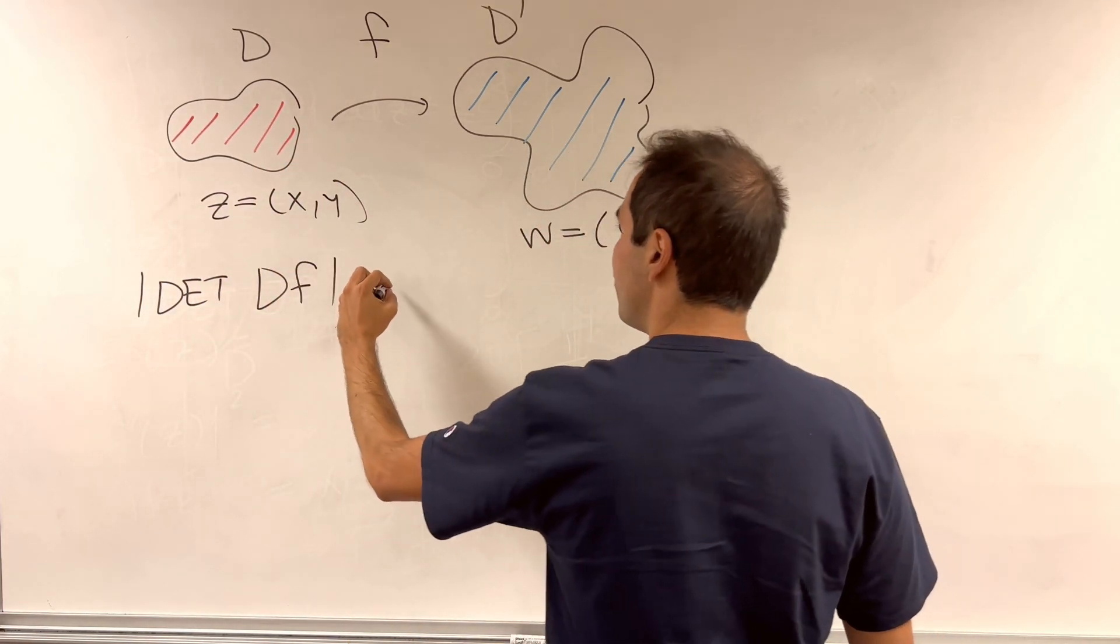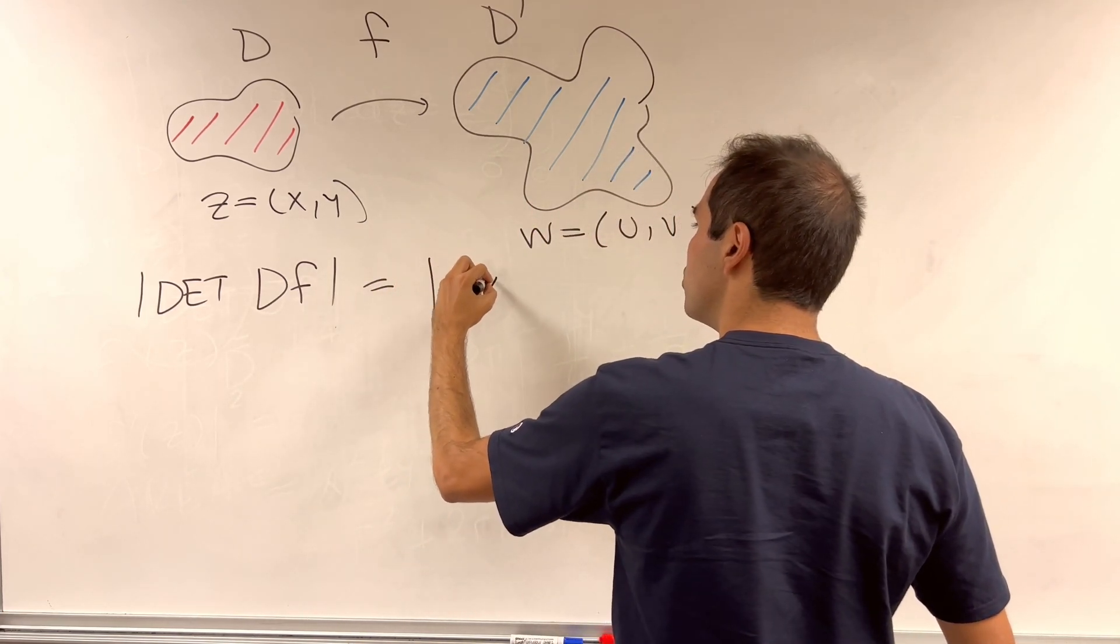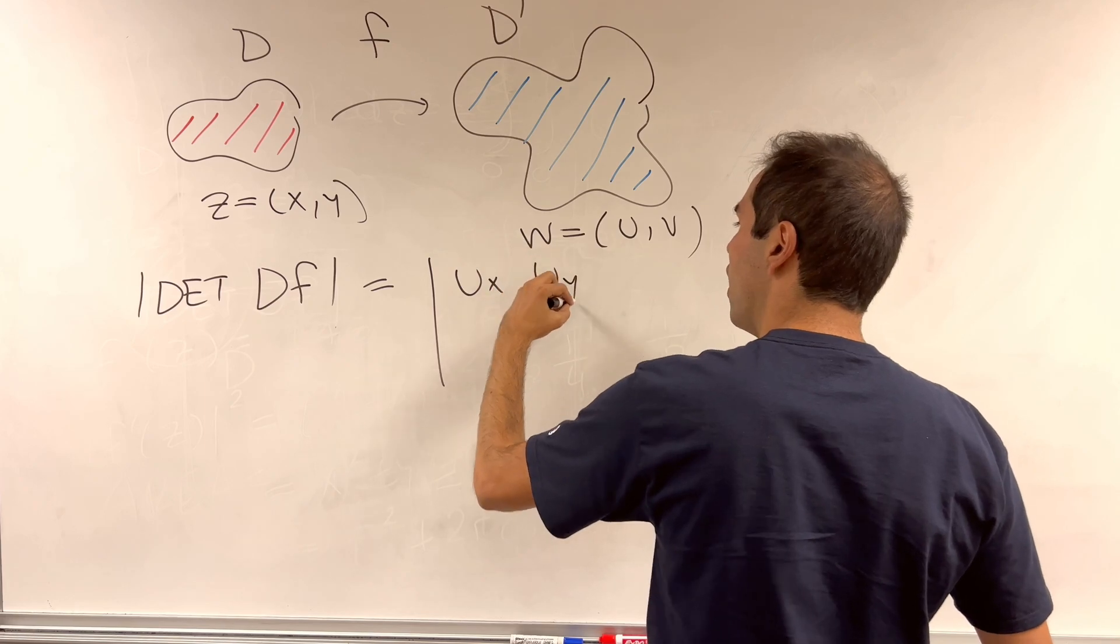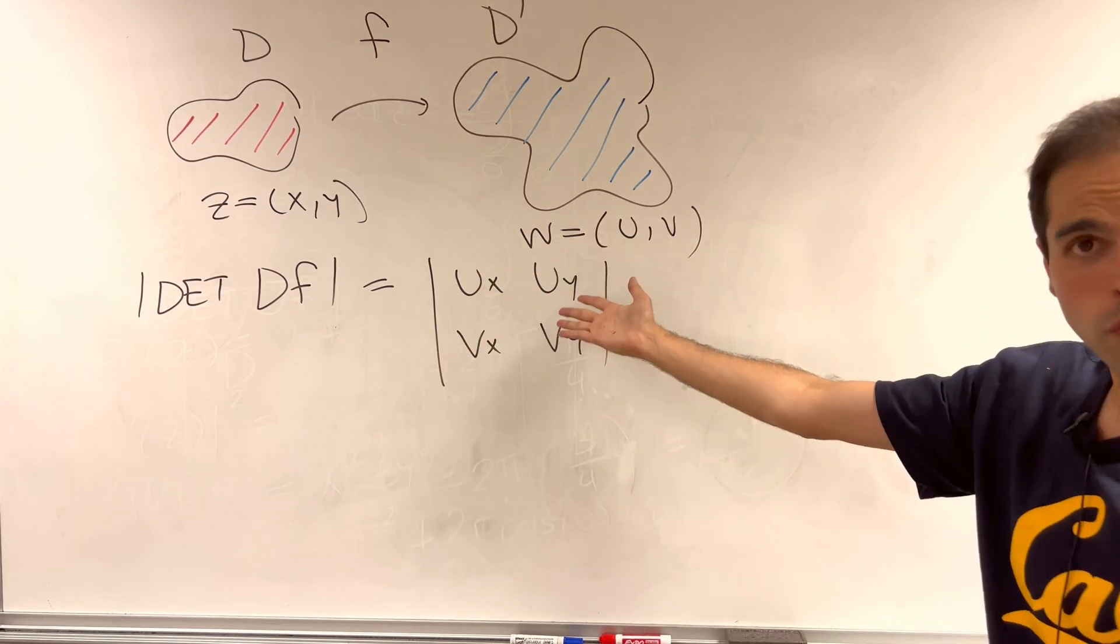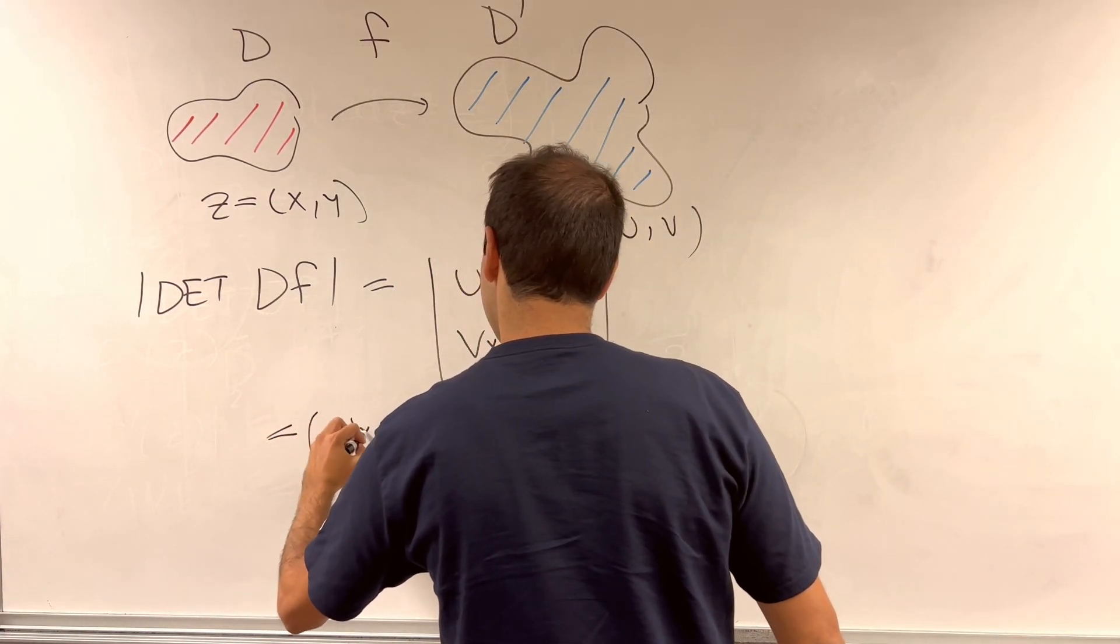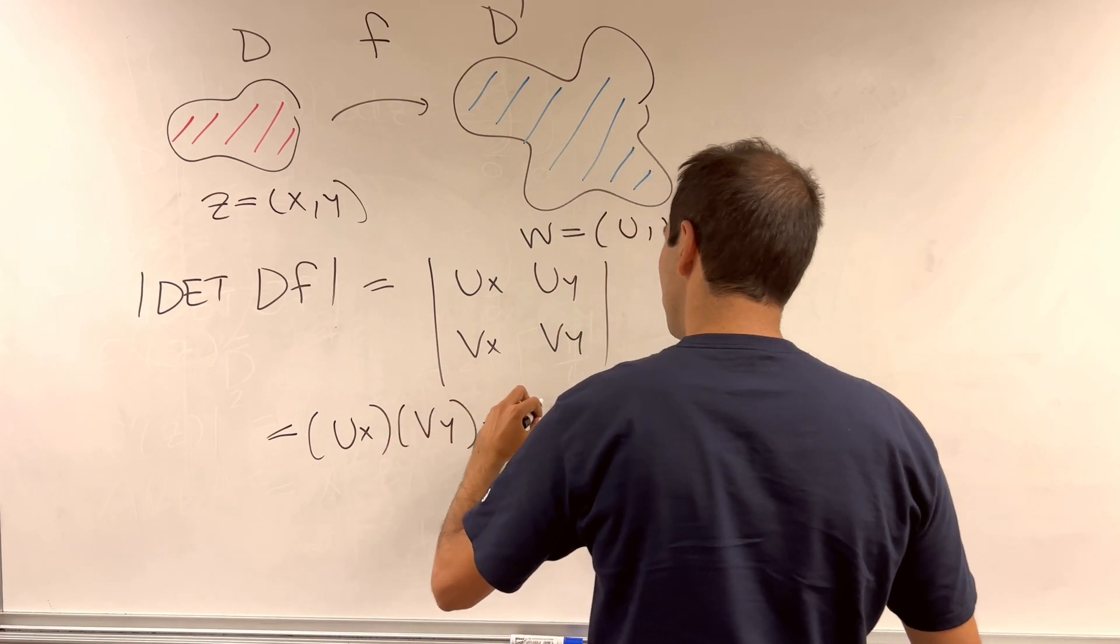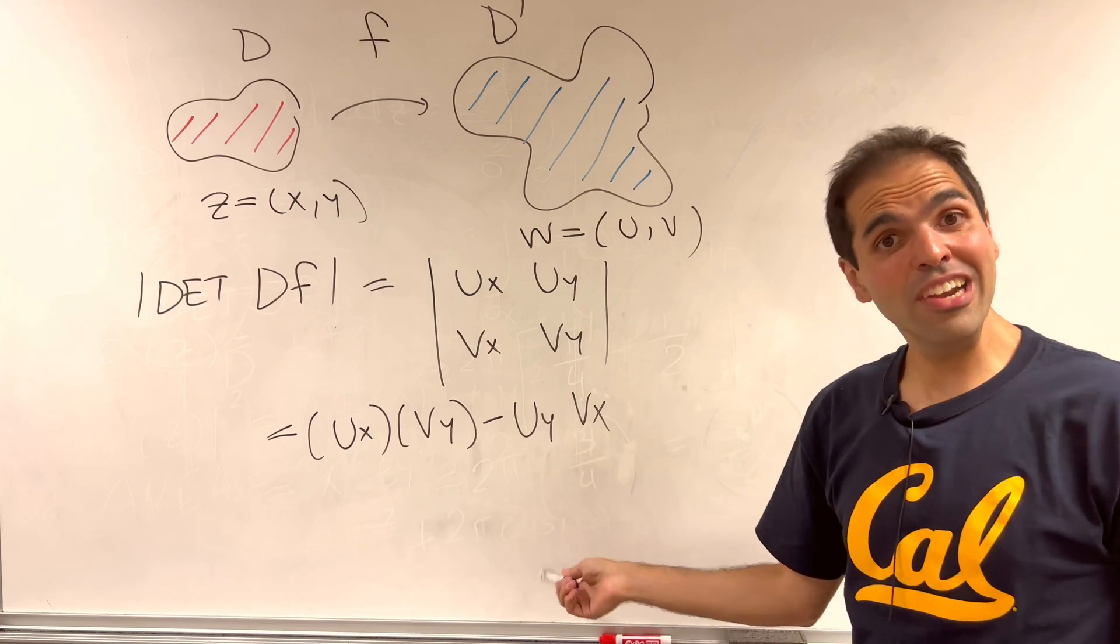So df, but if f is uv, then df is just ux, uy, vx, vy. So in general, the Jacobian is just ux, vy, minus uy, vx. In general, this is just gibberish.